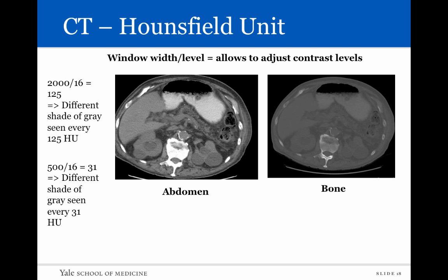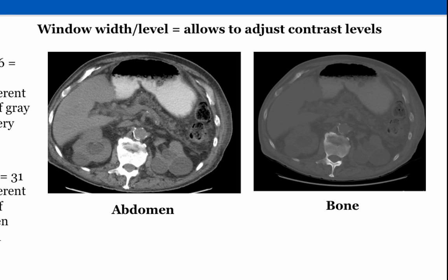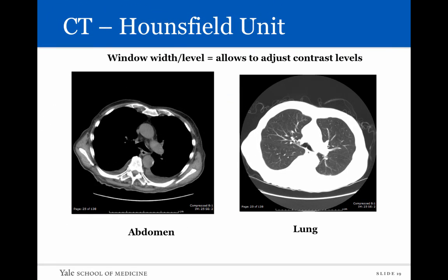The window level is the central number across that window width. If the window width goes from minus 1,000 to 1,000 — spanning 2,000 Hounsfield units — the window level is set at zero. If it goes from minus 100 to 400, the window level will be at 150. These are preset on CT scan machines. When viewed on an image viewer, the abdomen will look one way; adjusting for bones shows bone detail; using the same settings to look at the lungs makes them appear very black, but adjusting the window width and level for lungs reveals much more detail and the internal architecture becomes clearly visible.